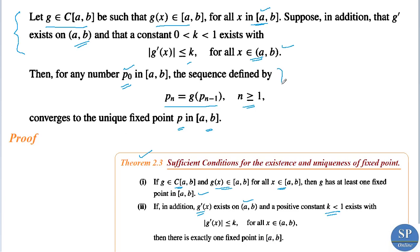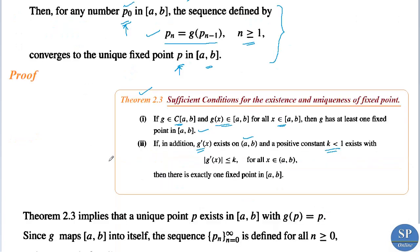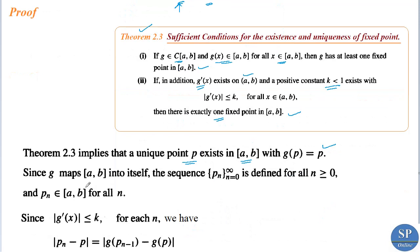We need to prove that for any p₀ in [a,b], the sequence defined by p_n = g(p_{n-1}) converges to the unique fixed point p in [a,b]. From Theorem 2.3, if these conditions are satisfied, there exists exactly one fixed point — a unique fixed point p in [a,b] with g(p) = p. Since g maps [a,b] into itself, the sequence {p_n} for n = 0, 1, 2, … is defined for all n ≥ 0 and p_n belongs to [a,b] for all n.